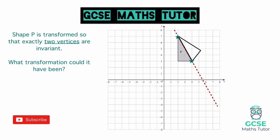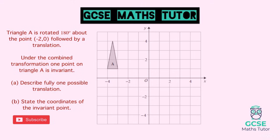Now let's look at an exam style question. Triangle A is rotated 180 degrees about the point (−2, 0), followed by a translation. Under the combined transformation, one point on triangle A is invariant. We need to describe fully one possible translation and state the coordinates of the invariant point. Feel free to draw this on graph paper and have a go before continuing.